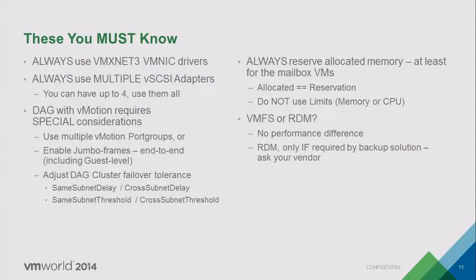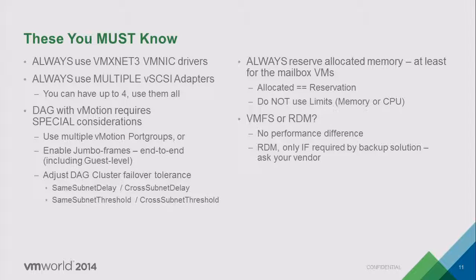You should definitely be using vmxnet3. Just as with PVSCSI for storage, vmxnet3 is a paravirtualized network controller made to run on a virtual machine. The CPU utilization at the hypervisor level is lower than you'd get with the e1000, which is a legacy driver. Install VMware Tools, change to vmxnet3, and in a large Exchange environment you'll potentially see better throughput and definitely see lower hypervisor-level CPU utilization.